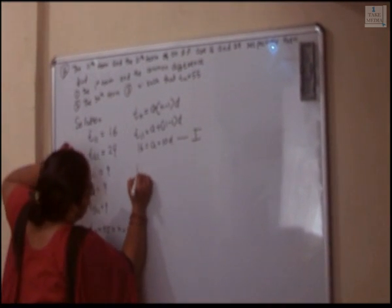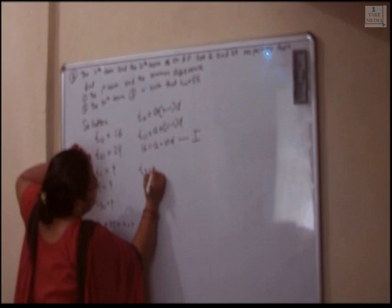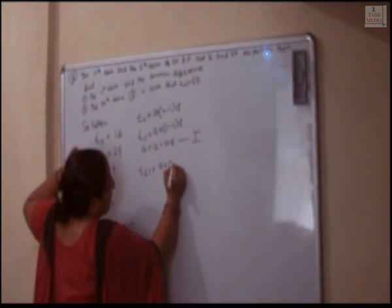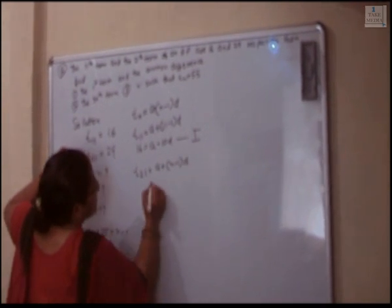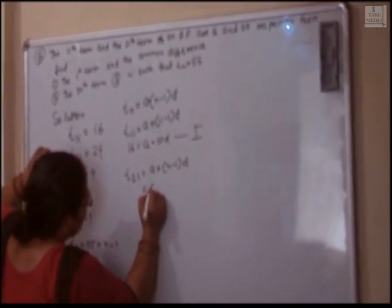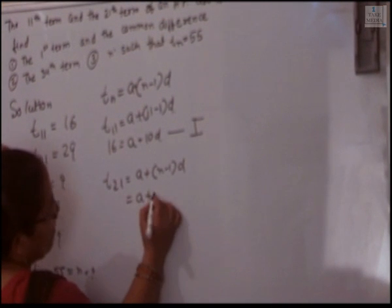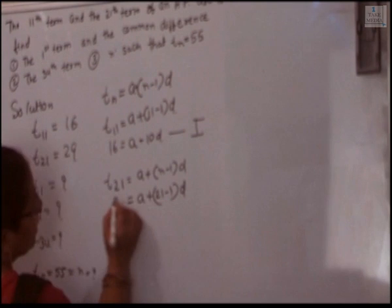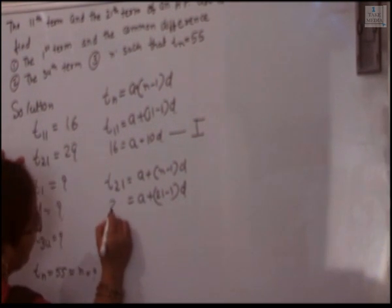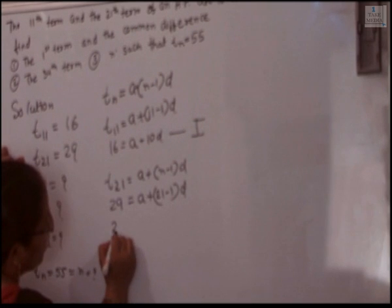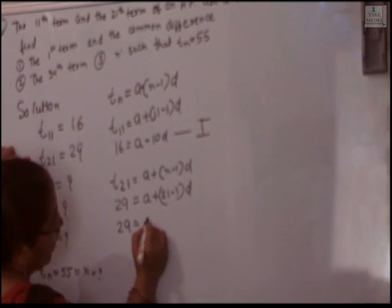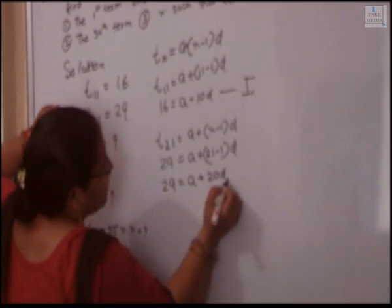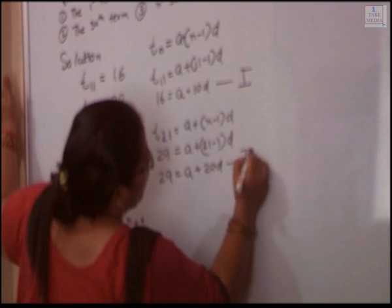Now substitute the value T21. The formula is A plus N minus 1 into D. With N equal to 21, we get A plus 20D. Substituting T21 equal to 29: 29 equal to A plus 20D. This is equation number 2.